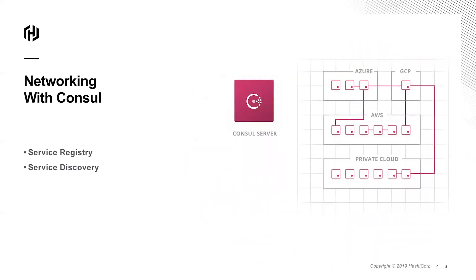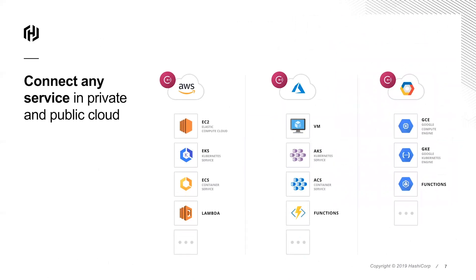The core concept of networking within Consul is driven around creating a common service registry where information about the health and location of all your services can be managed in real time. This information can then be used to drive network automation within your services and other networking hardware by discovering information using Consul's DNS interface or leveraging API integrations. Consul works across many different platforms, allowing you to seamlessly connect workloads across multiple data centers and clouds, serving as the bridge between modern and legacy platforms.